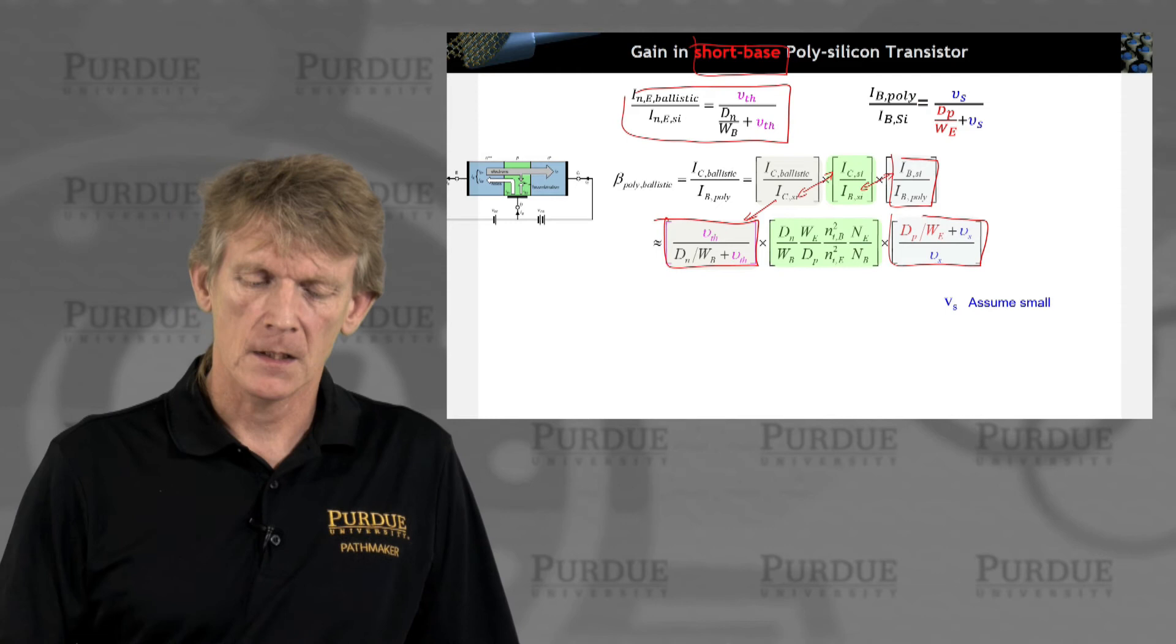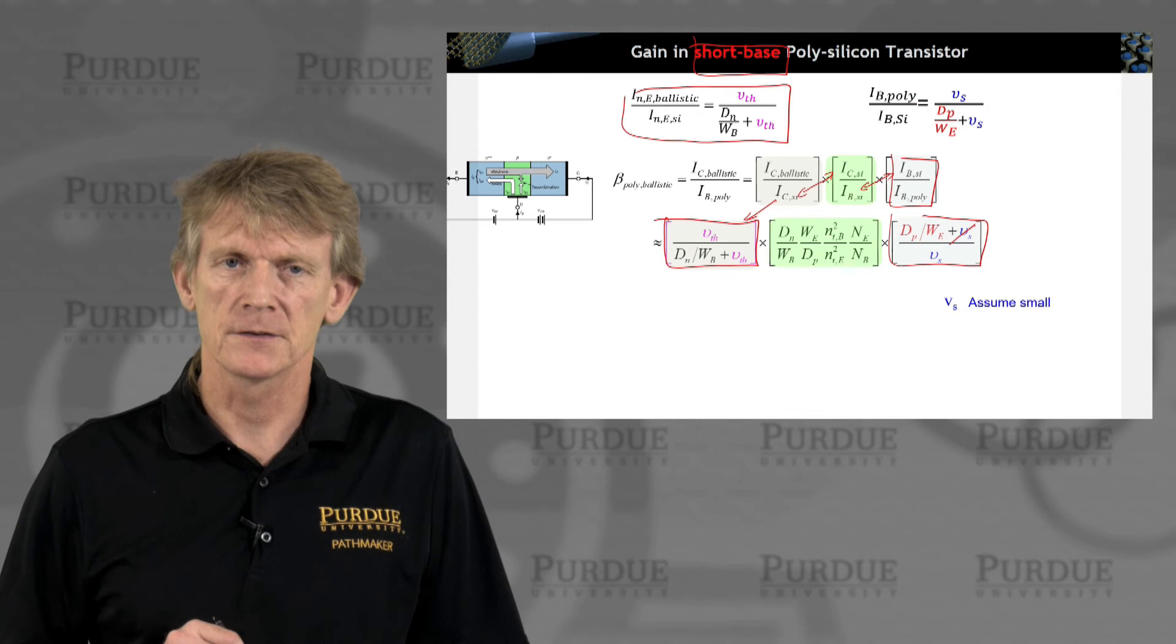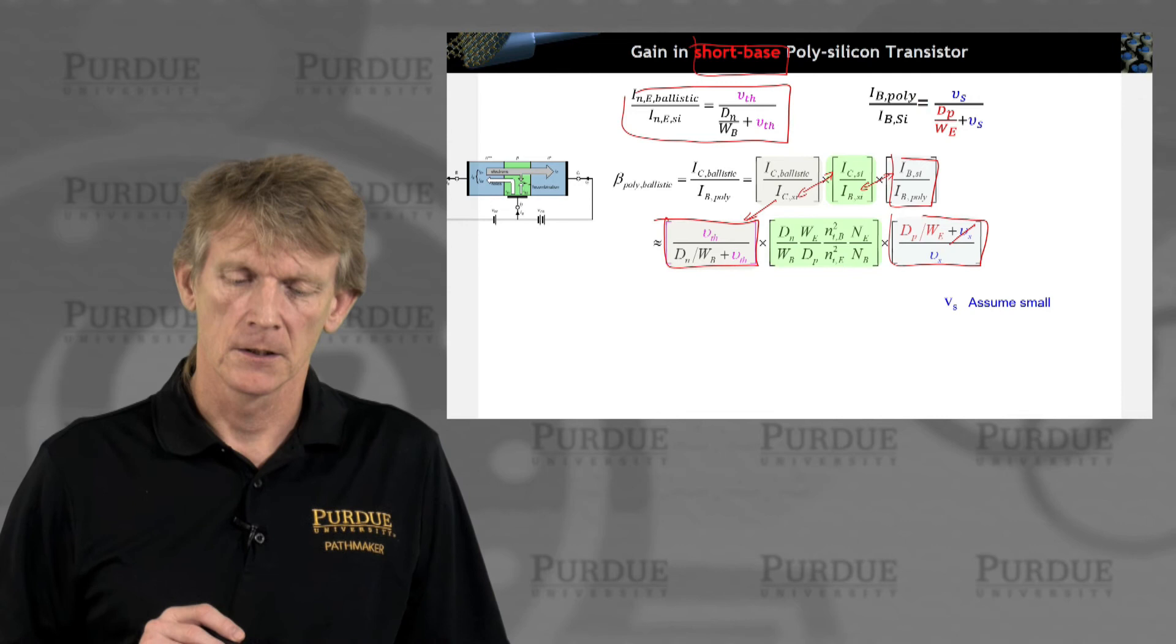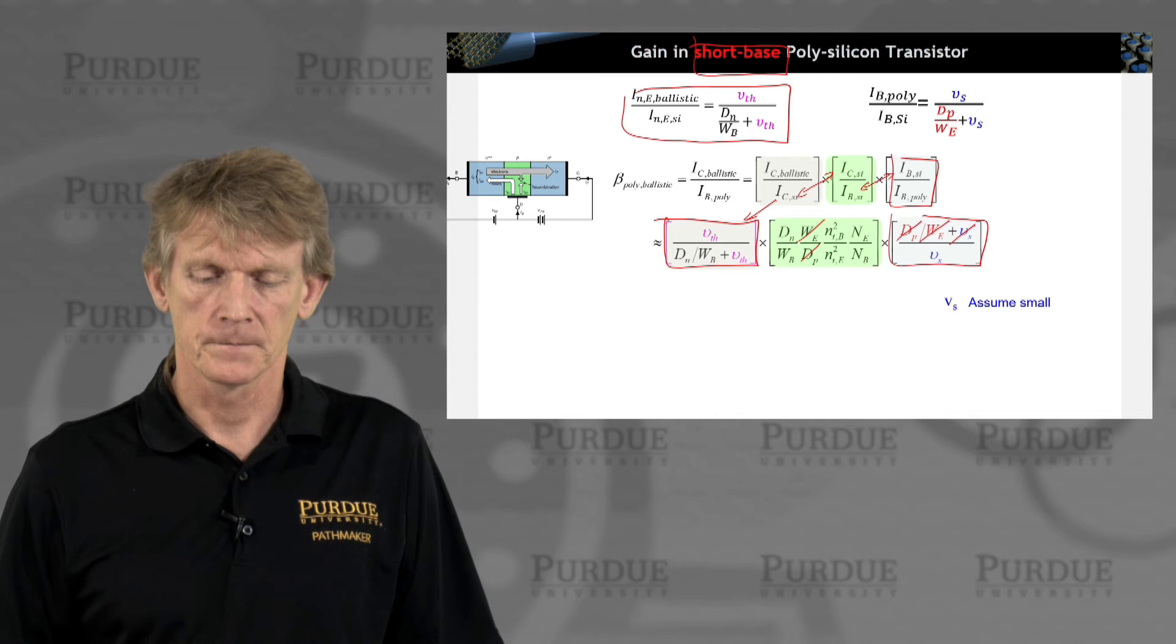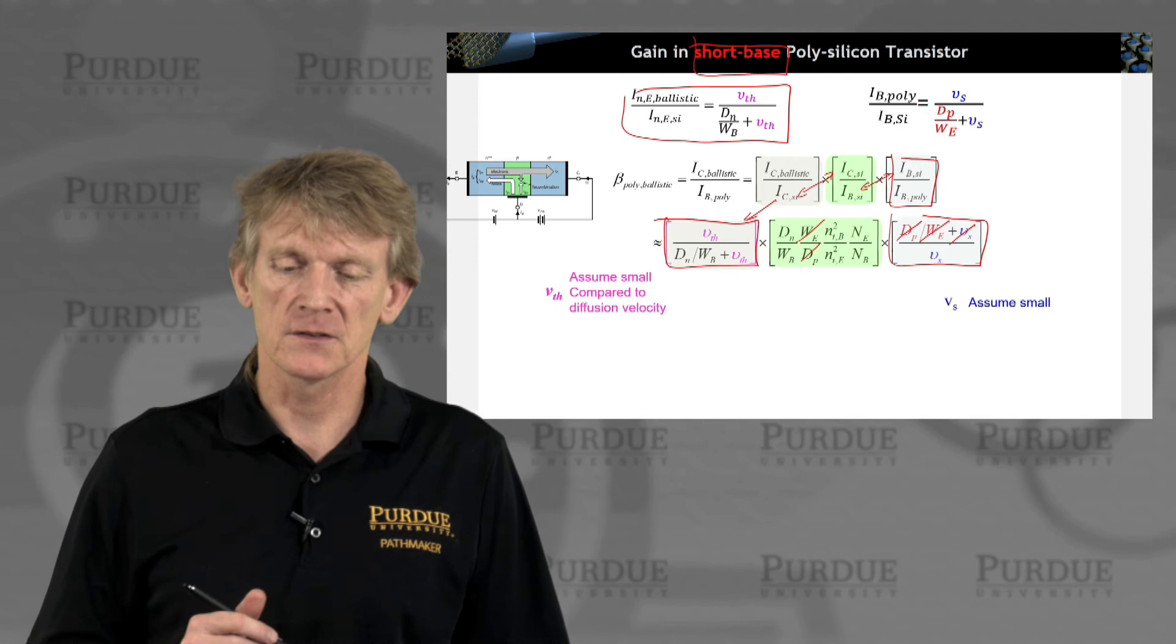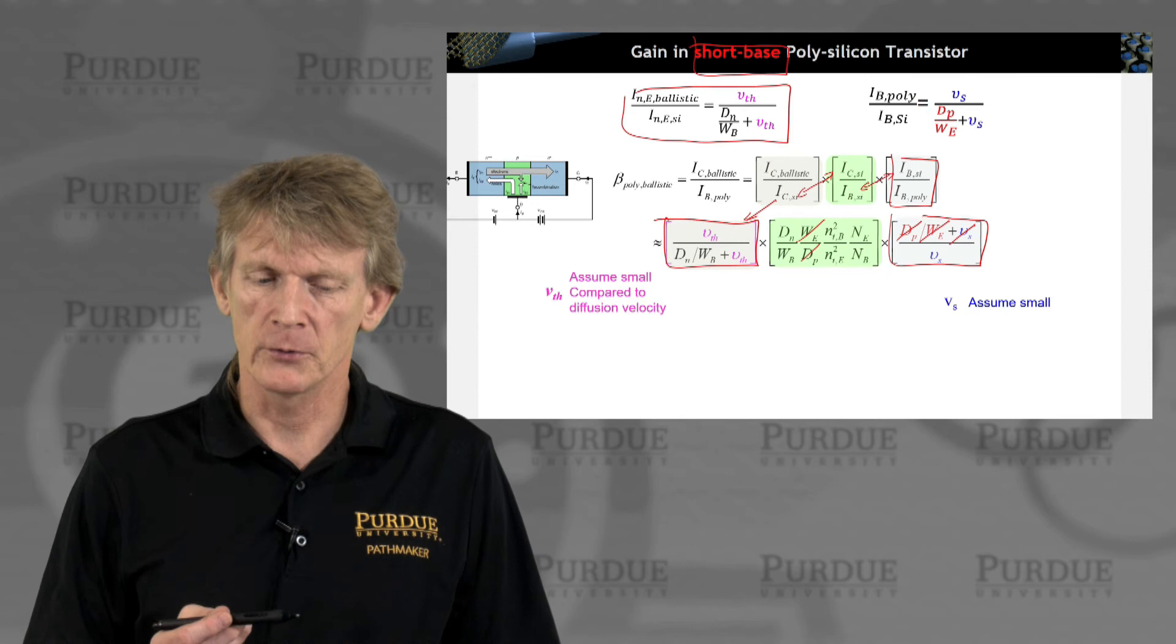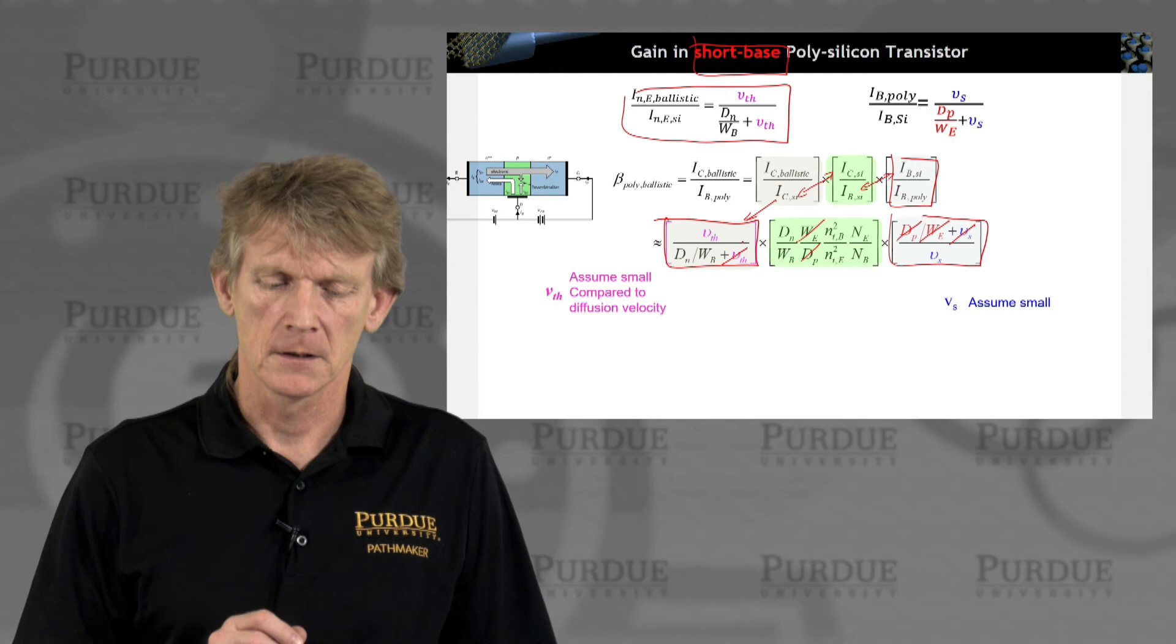Let's do this. So again, we're assuming that the surface velocity here in the poly is small compared to the diffusion velocity. So that gets us a term DP, DP, and WE, WE. So we get rid of that. We'll also assume that the thermal velocity is small compared to the diffusion velocity. We just did that in the previous assumption. So I'm going to cancel this term here.